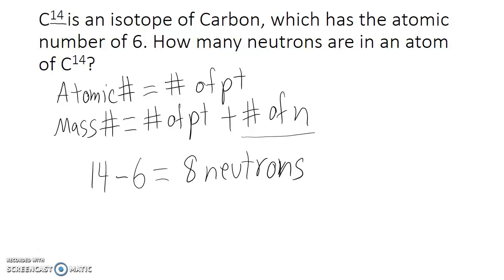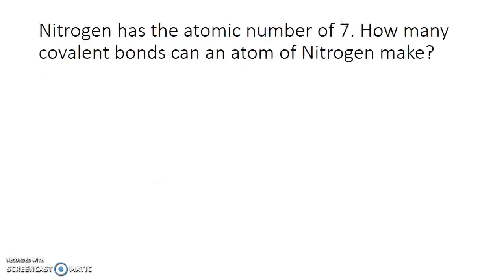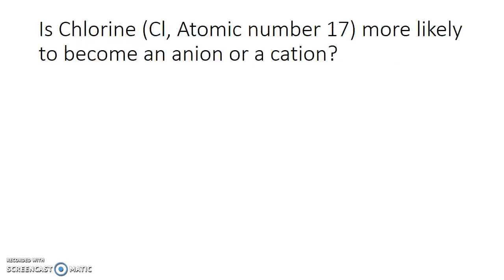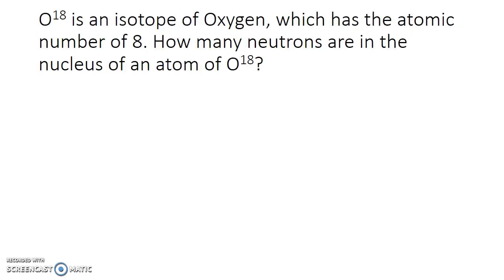Now that we've gone over these problems, I would like you to practice a few of these on your own. So nitrogen has the atomic number of 7. How many covalent bonds can an atom of nitrogen make? Is chlorine, with the atomic number of 17, more likely to become an anion or a cation? And oxygen-18 is an isotope of oxygen, which has the atomic number of 8. How many neutrons are in the nucleus of an atom of oxygen-18?